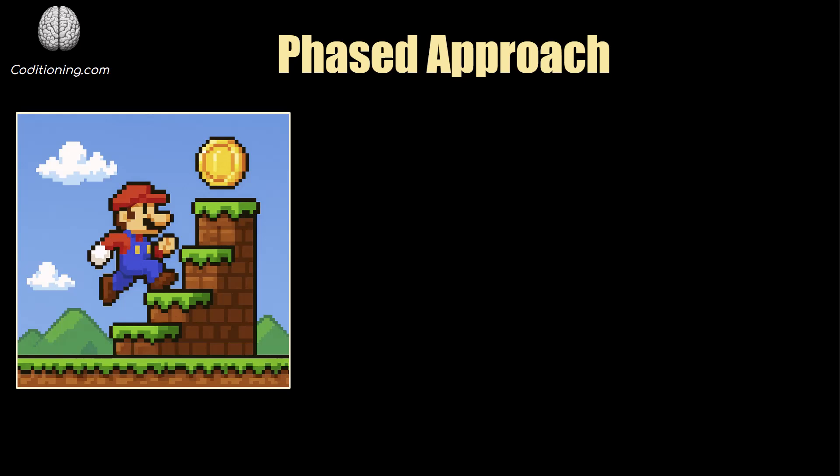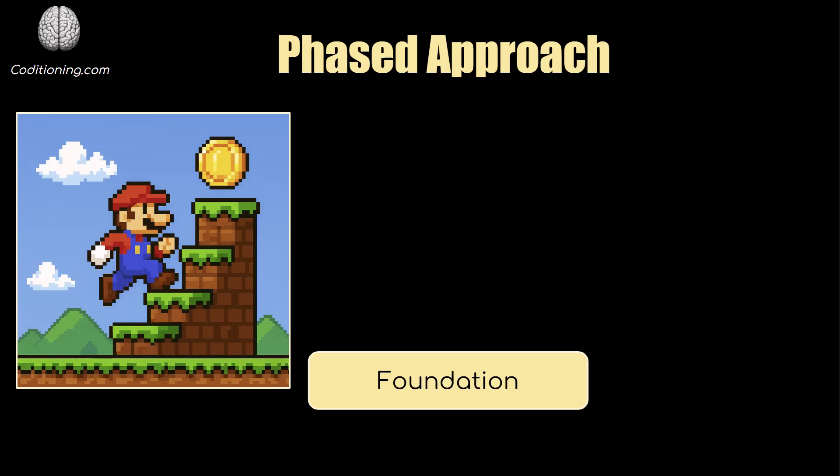I'm going to quickly dive into this phased learning approach that is really important. Essentially, you have a goal — for example, to learn data structures and algorithms, or maybe you're preparing for a specific company like Meta and want to go through 200 of their previously asked questions. With DSA, the phased approach starts with the foundation phase, which is foundational knowledge on key concepts: arrays, graphs — just focus on having that understanding. This isn't about solving problems or passing interviews; it's just understanding the theory.